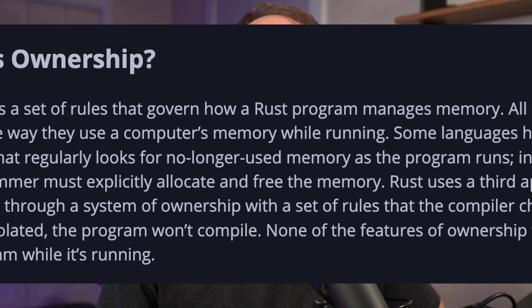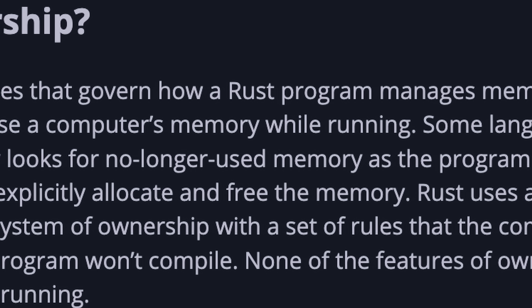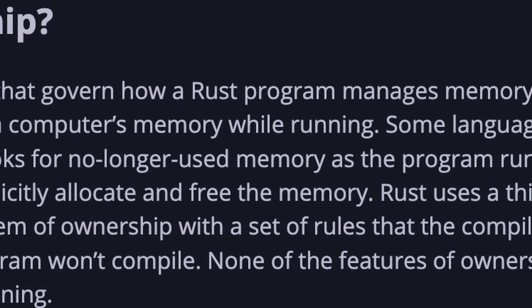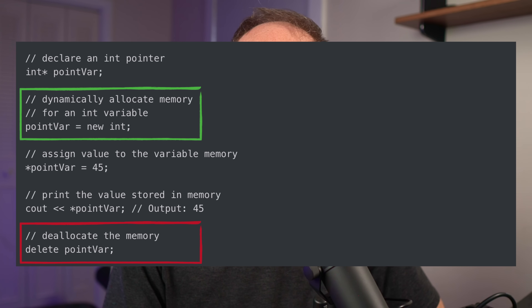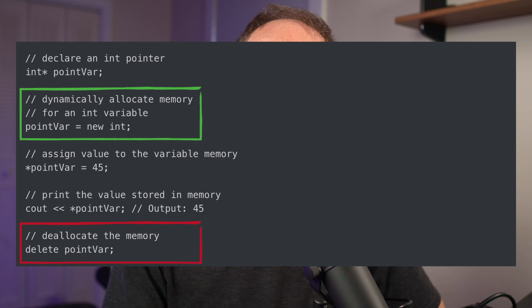For anyone learning Rust, you know that pretty quickly you're forced to understand ownership, which are rules that govern how a Rust program manages memory. You don't need to manage it manually — to allocate and deallocate it like you do with C or C++ — but it takes a unique approach in how it handles it, through a system of ownership.